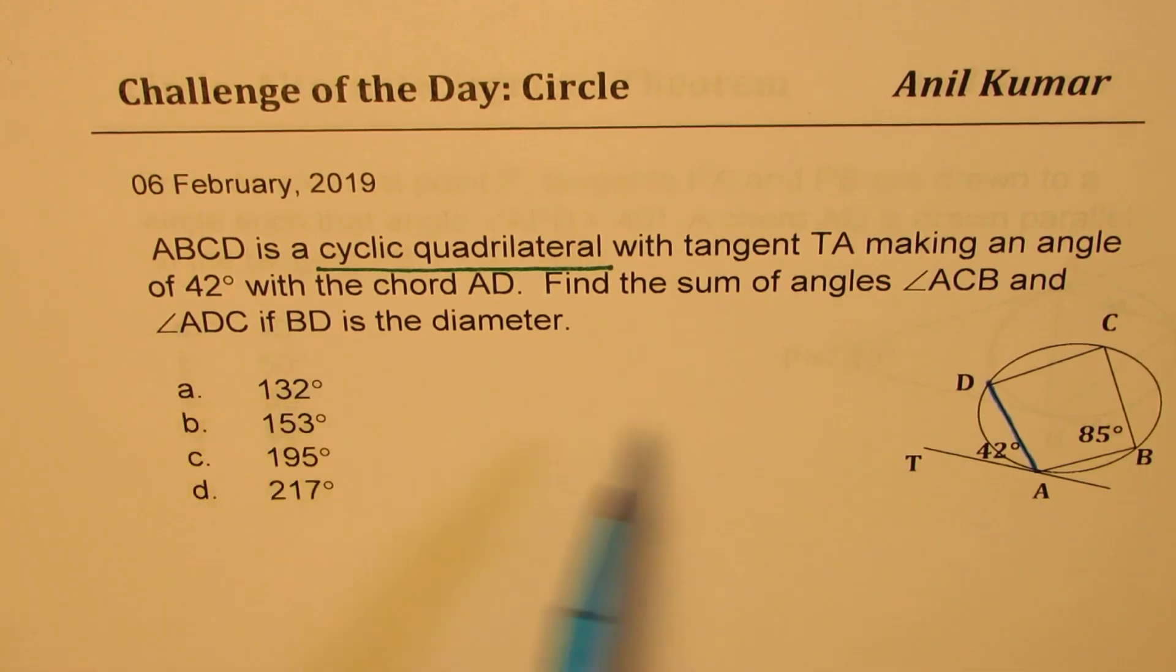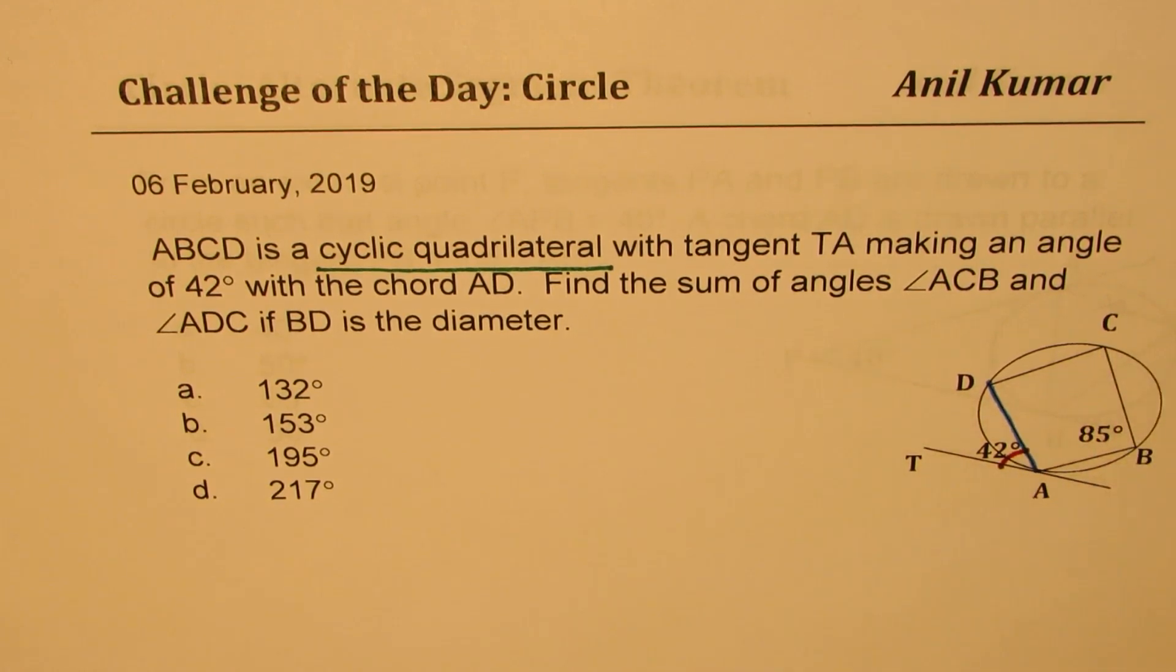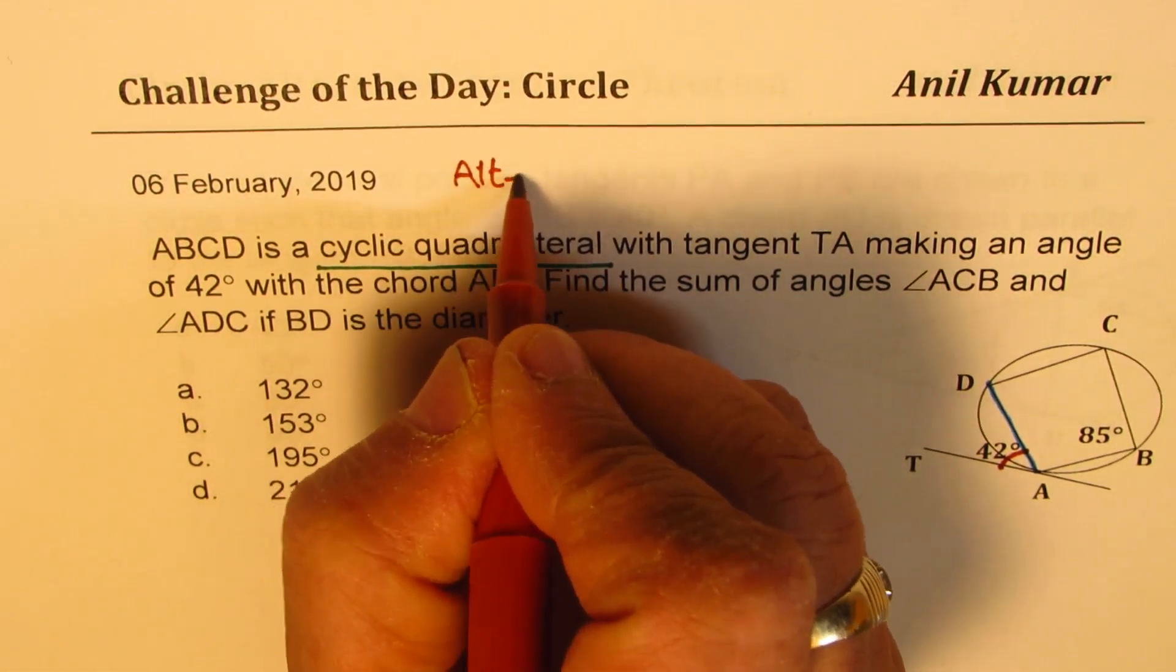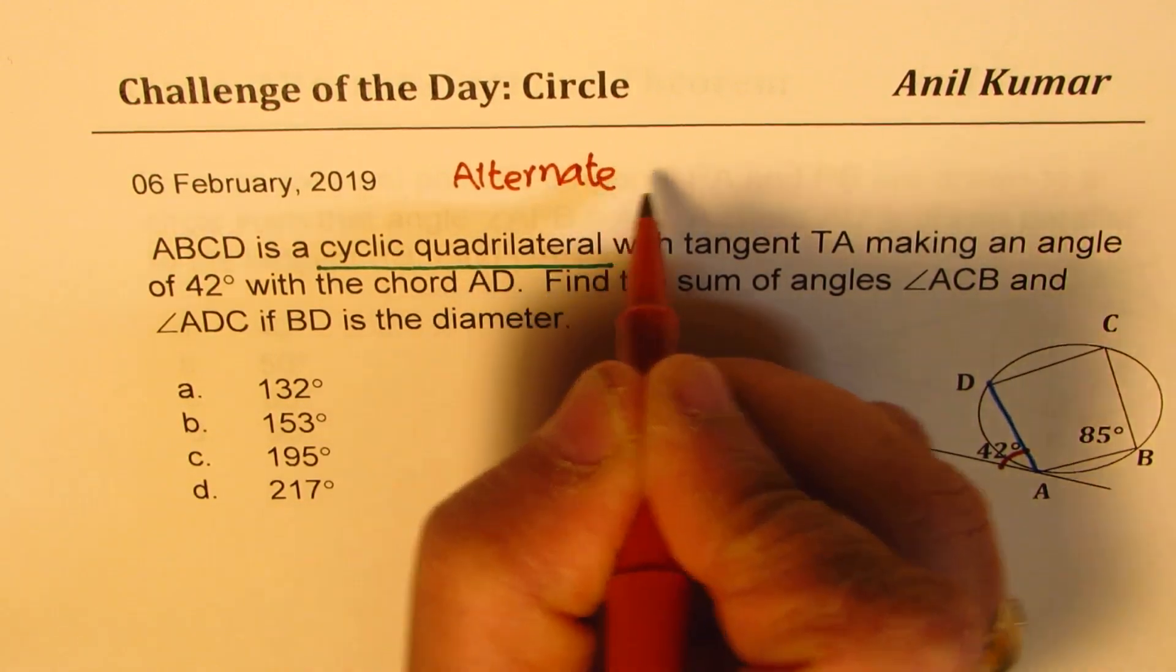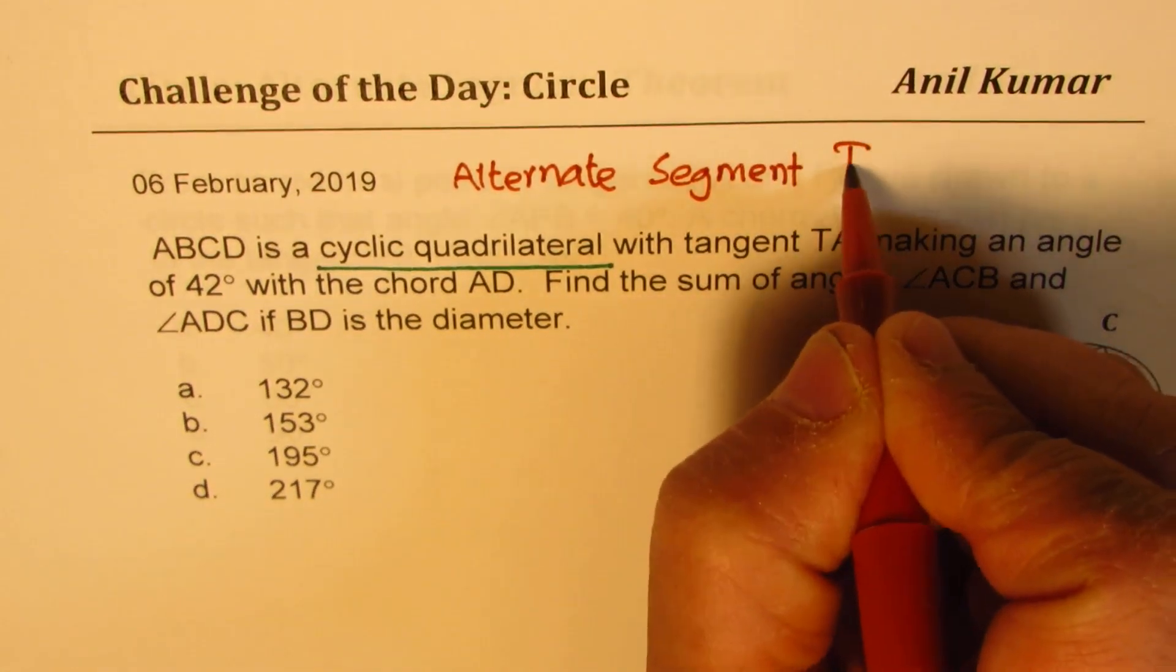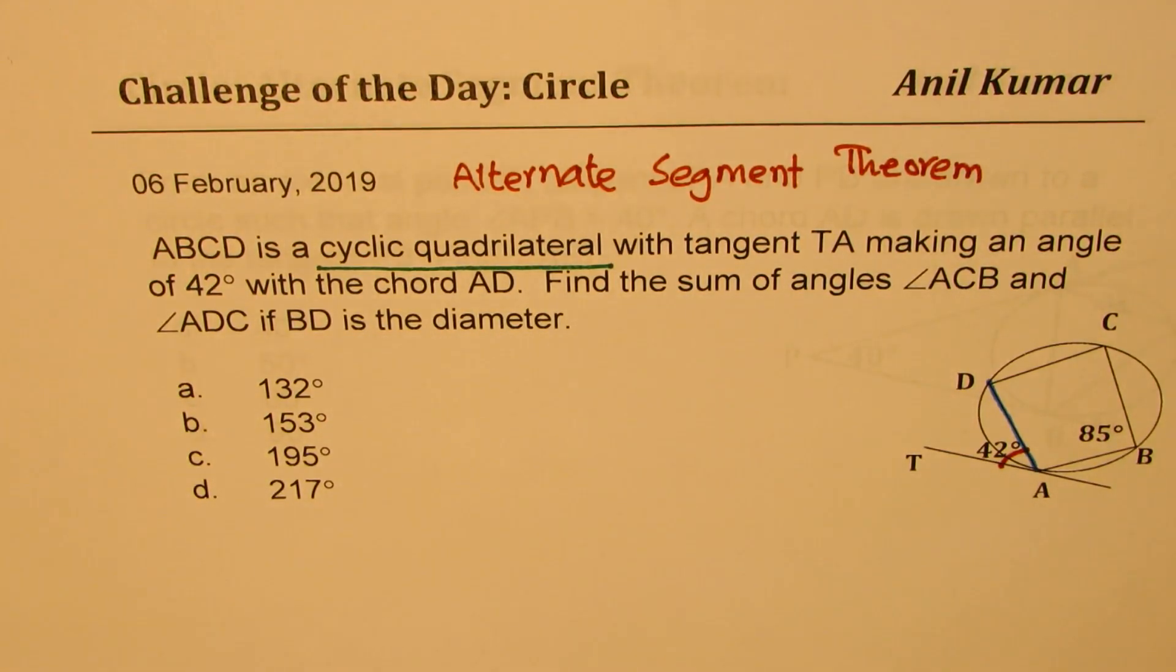Angle 42 with the tangent TA. So the angle mentioned here is this particular angle. Now this angle is equal to some angle inside also, which we can get from alternate segment theorem. So I'll provide you with a link where you can go through some videos and understand what the alternate segment theorem is.